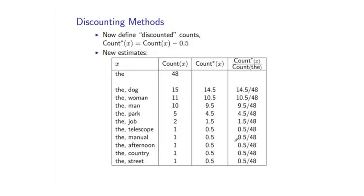So, discounting methods build on that intuition in the following way. We're going to define these new discounted counts. I'll use count star to refer to a discounted count as simply count of x minus 0.5 for any bigram x whose count is 1 or more. So, looking back at this example, if the count here is 15, for example, the discounted count is going to be 14.5.